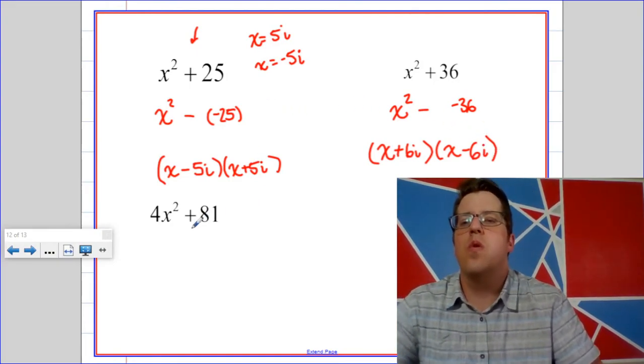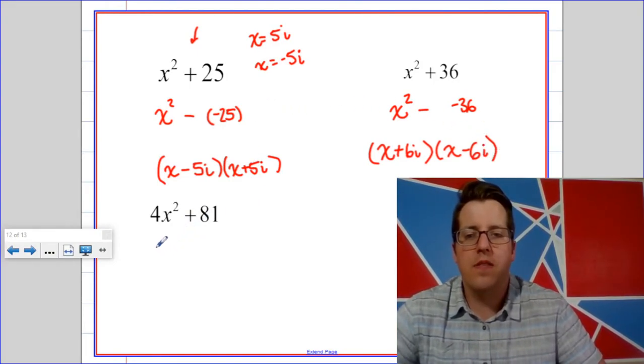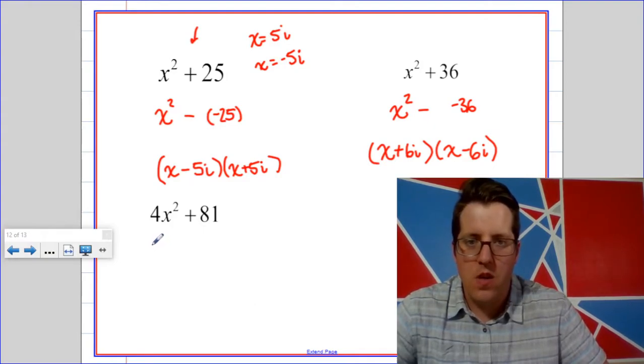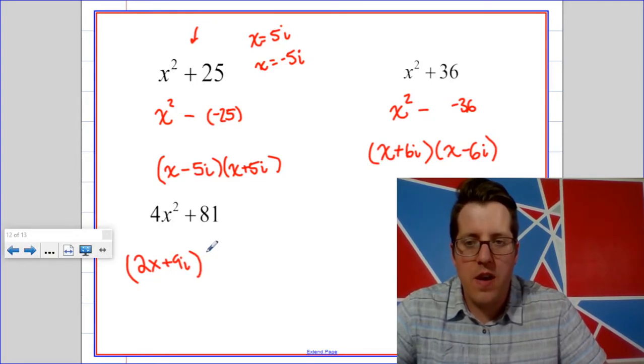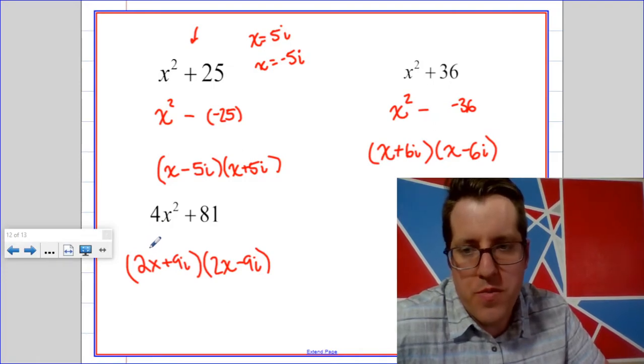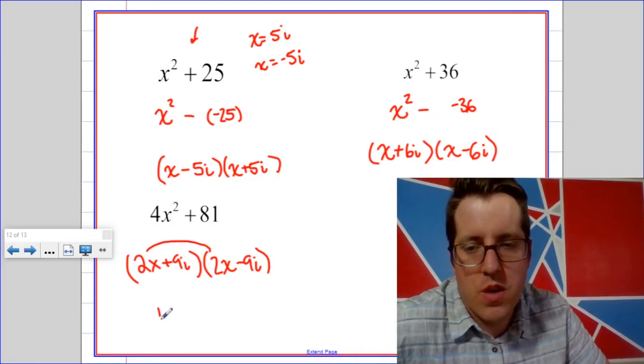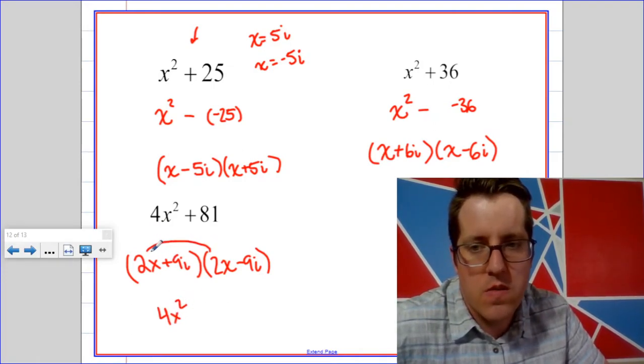So then what would it be for something like 4x squared plus 81? Well if we follow the same pattern, let's see if 2x plus 9i times 2x minus 9i works. Just kind of guessing, staying with the same sort of idea. So when we FOIL to check, I get 4x squared. Okay, good start.